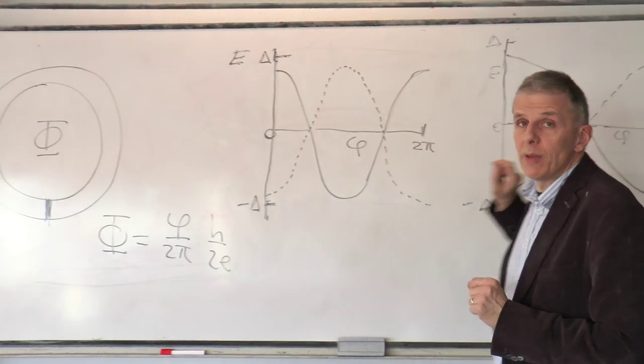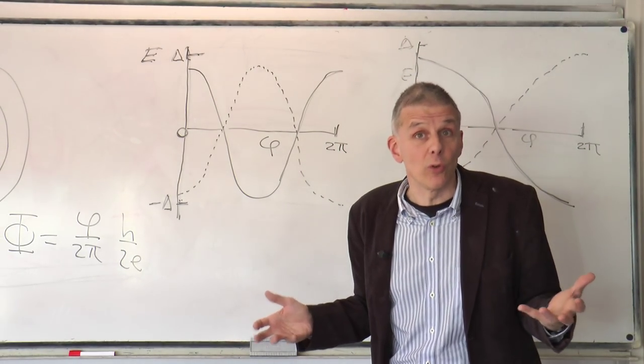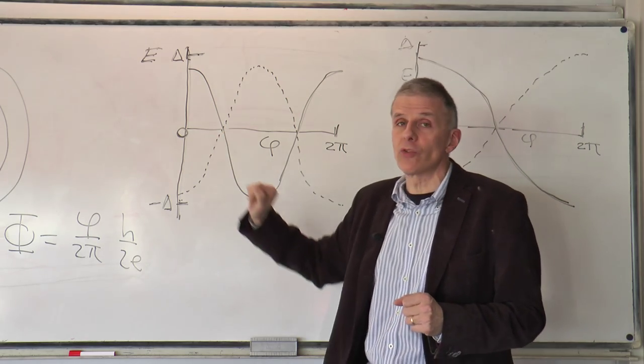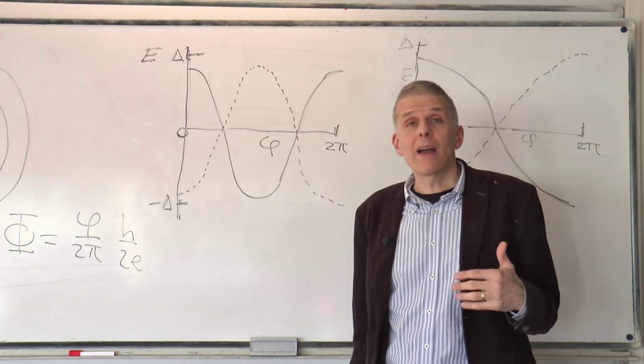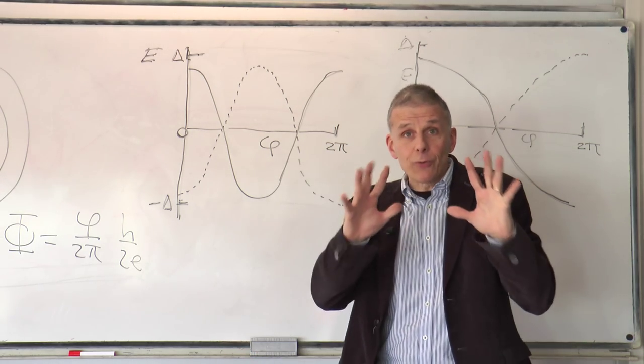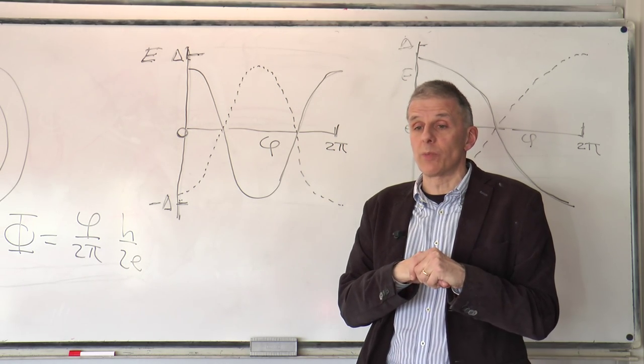So this is an anomaly, and this anomaly is called a topological or topologically non-trivial superconductor. And this effect here, that the periodicity of the Josephson effect is four pi instead of two pi, that is what is called the four pi periodic Josephson effect. That is the first signature, key signature of topological superconductivity.